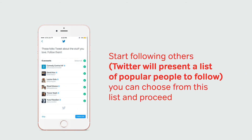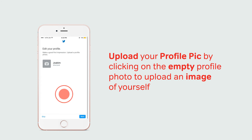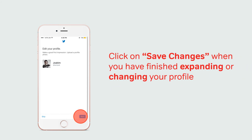From here on in, you can start following others. You can choose from this list and proceed. Start following people you know. Twitter will present names of people you may know, of which you can select some or choose to follow all. Upload your profile picture by clicking on the empty profile photo to upload an image of yourself. Click on save changes when you have finished expanding or changing your profile.